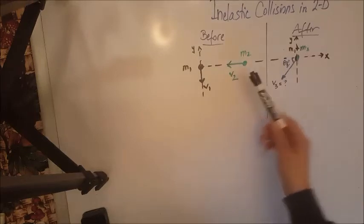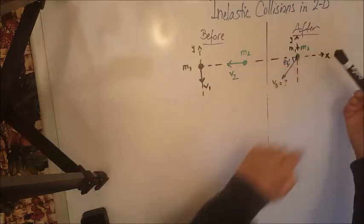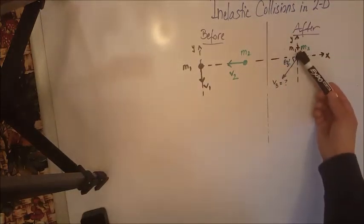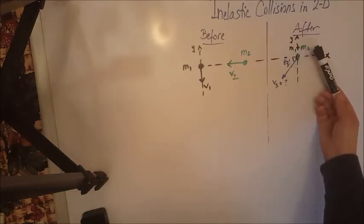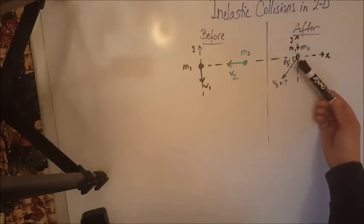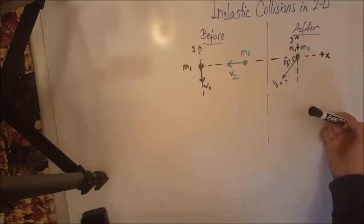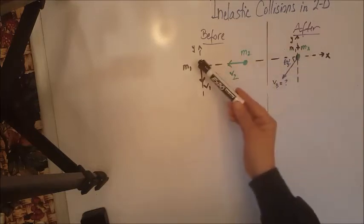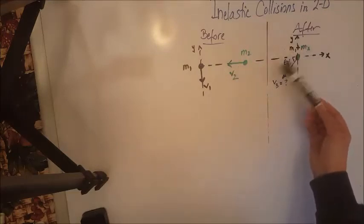The two objects will somewhere meet, and we take them to the next part of the diagram to have the two objects together, because the collision is inelastic. They will form the new mass M1 plus M2, and this new object will move at a velocity V3 that forms an angle theta 3 with the horizontal, and we are in quadrant 3. So we know M1, V1, M2, V2, and we are looking for V3 and theta 3.